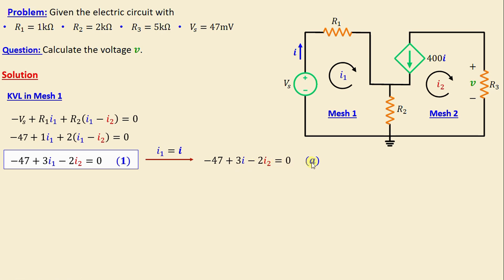Let's move on now to mesh 2. We can see here in mesh 2 that i2 is equal to -400i, and I will call this equation 2. By substituting equation 2 into equation (a), we derive one equation only in terms of i.